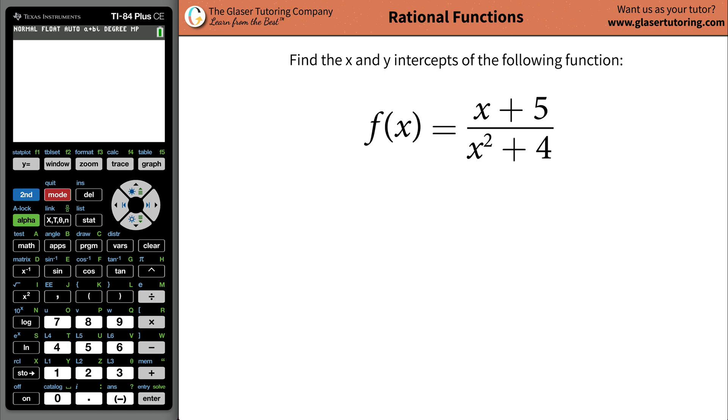Hi everyone, it's Andrew from the Glazer Tutoring Company. Today we'd like to teach you how to find the x and y intercepts for the following rational function, x plus 5 divided by x squared plus 4.